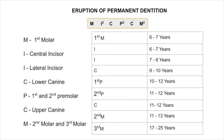The mnemonic is: 'Mike Put Closer to Your Mouth.' M-I-C stands for Mike, P stands for Put, and C stands for Closer, and M stands for Mouth. The sequence is M, I², C, P², C, M².